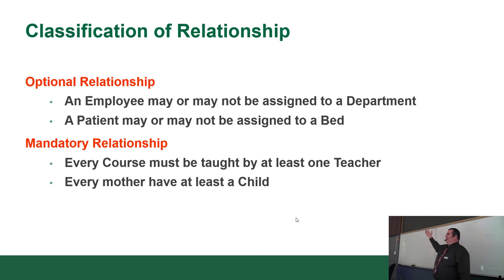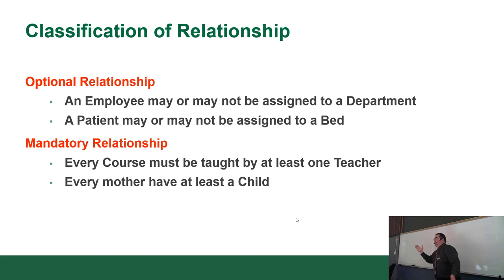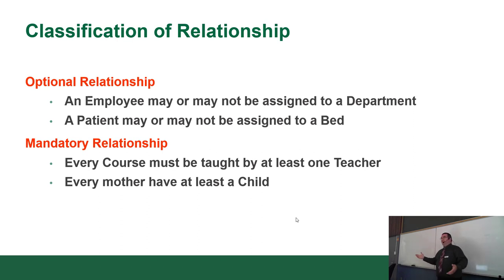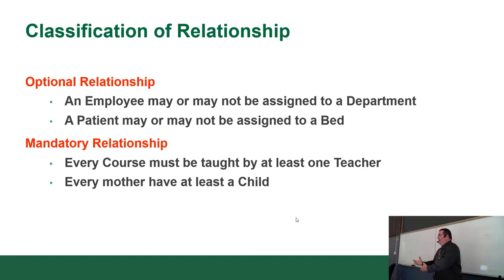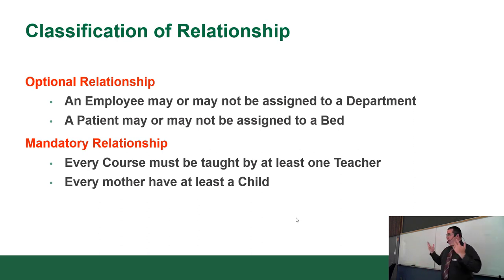Every child must have a mother, and to be a mother you must have at least one child. A mandatory relationship means it must be this — a course must have a teacher to be taught; otherwise that's not going to work.